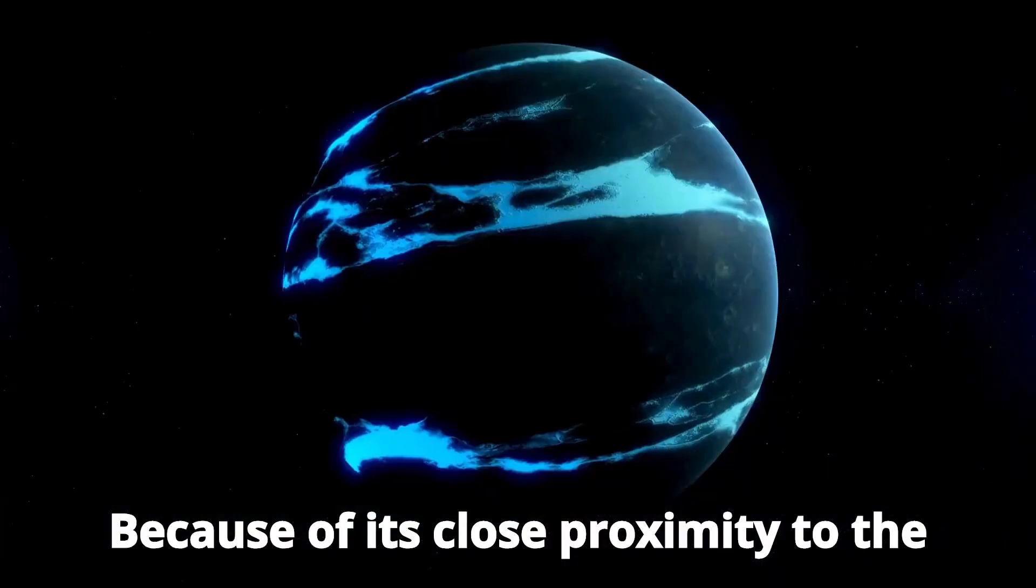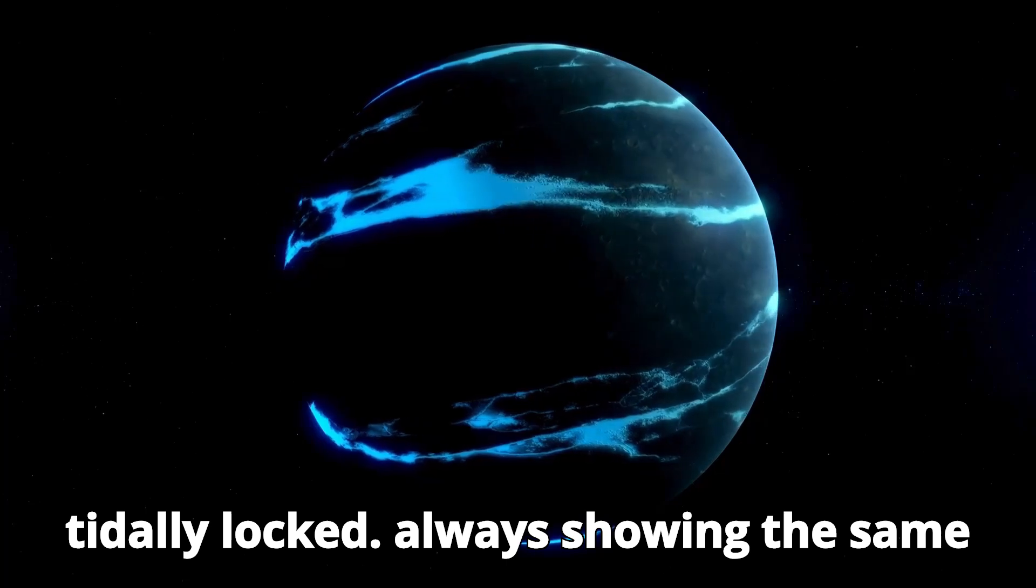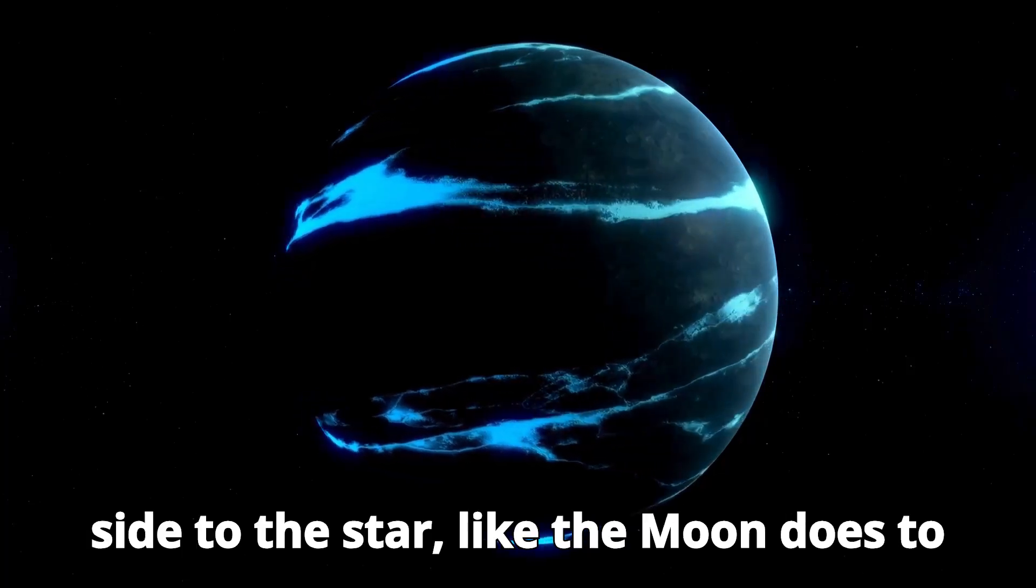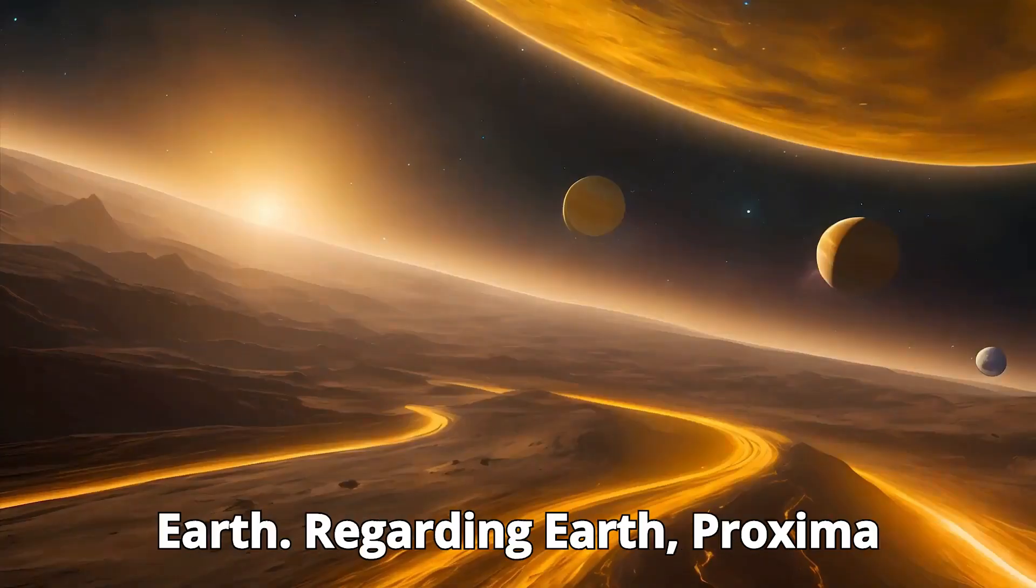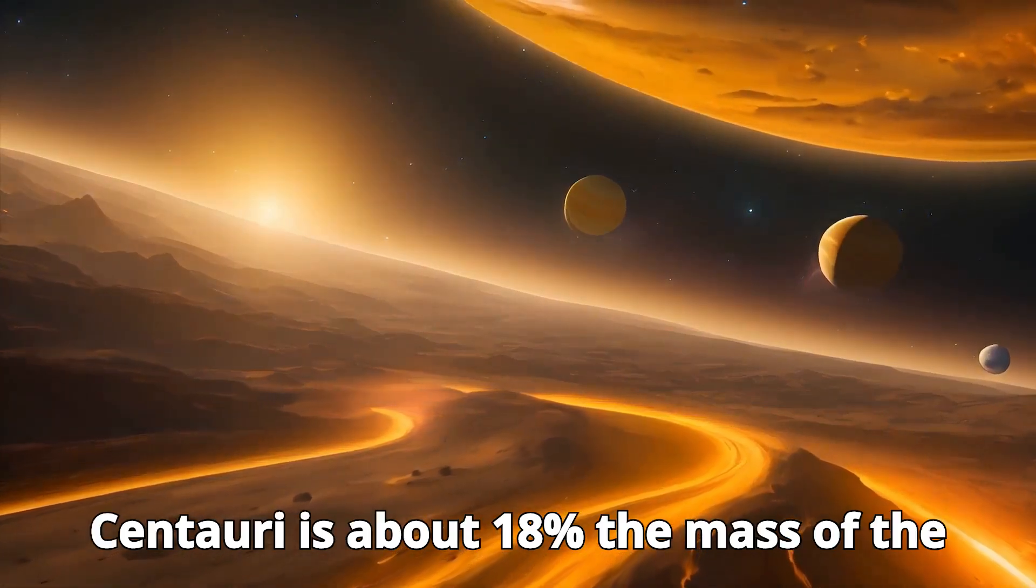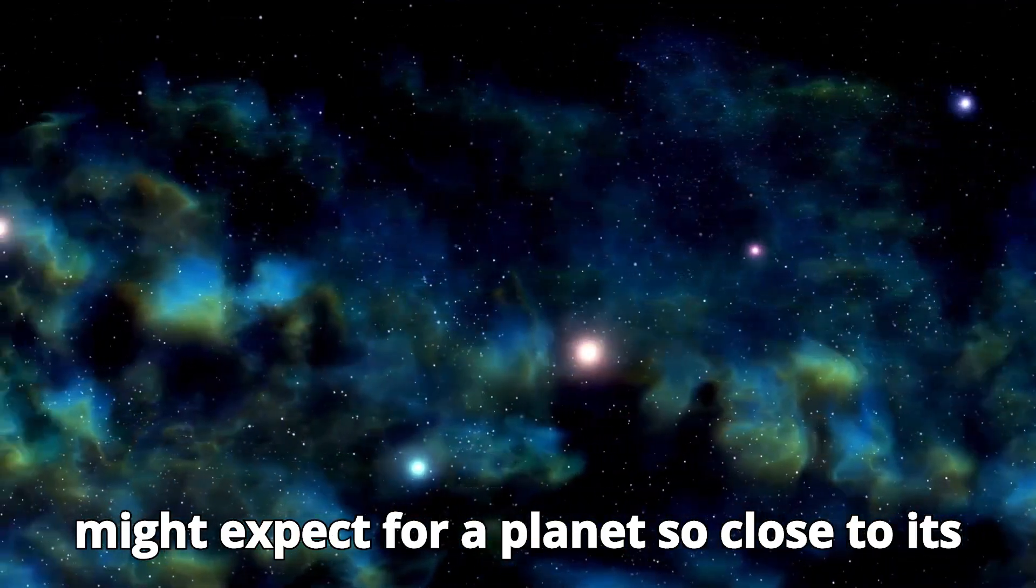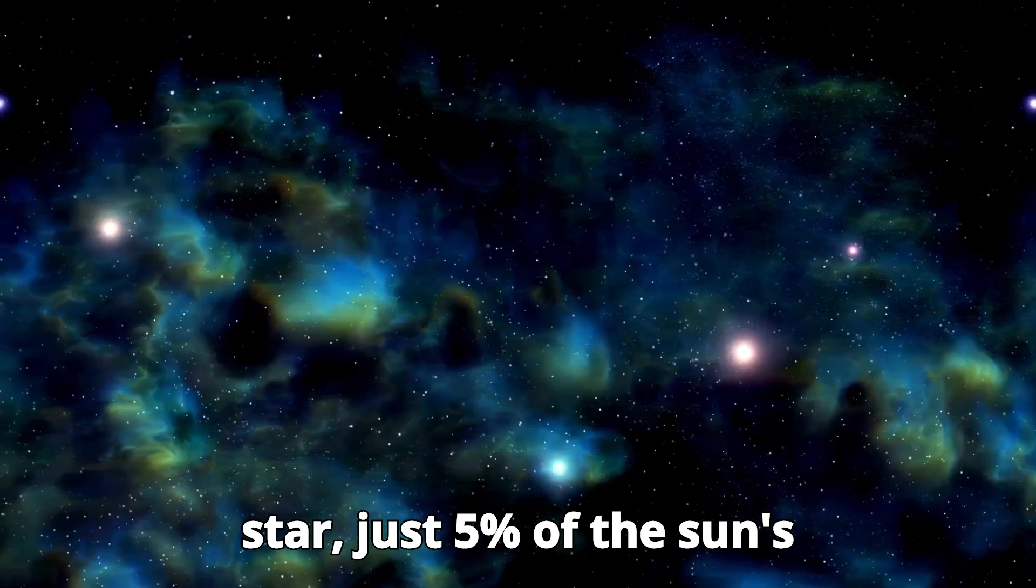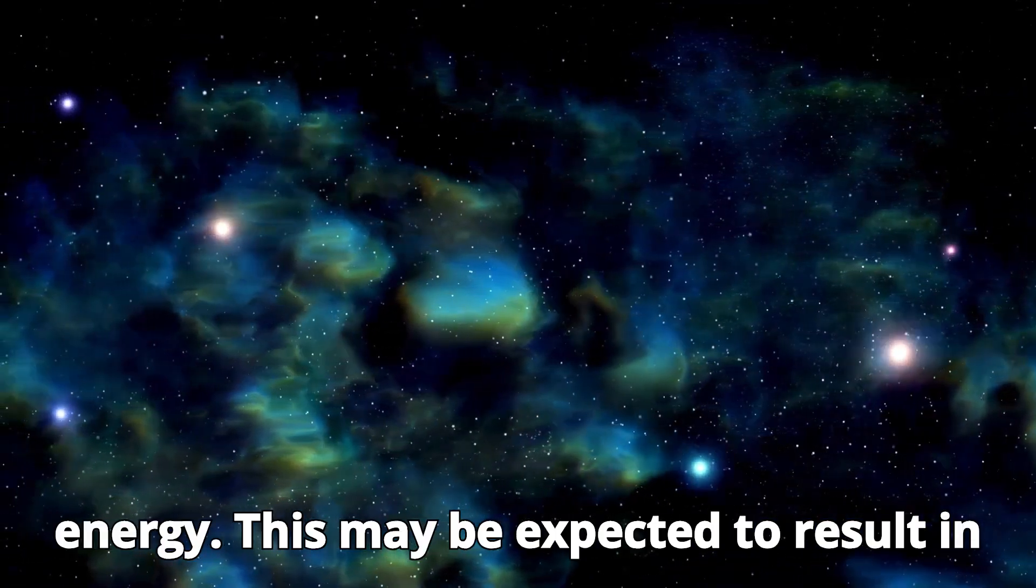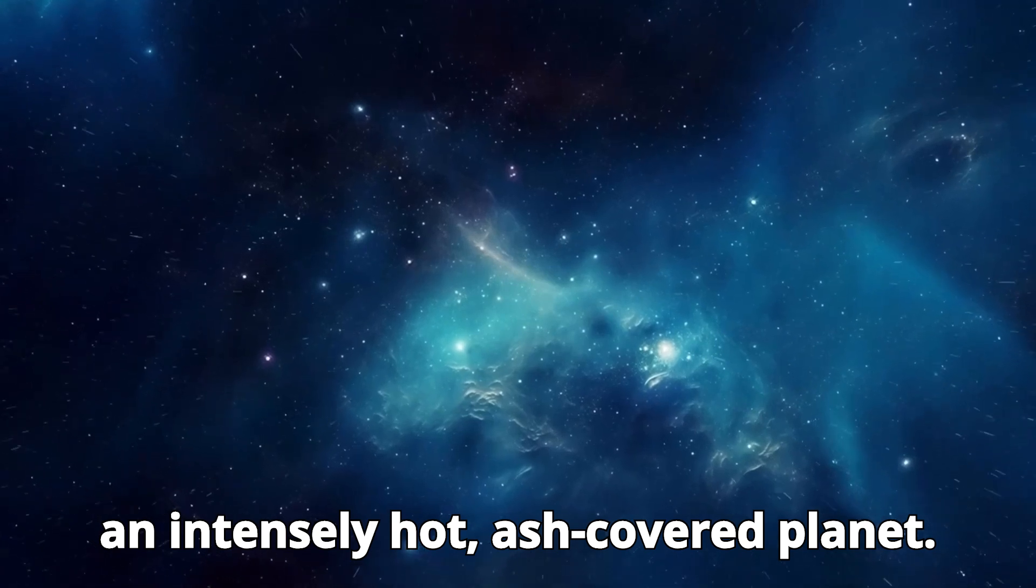Because of its close proximity to the star, Proxima b is believed to be tidally locked, always showing the same side to the star, like the Moon does to Earth. Regarding Earth, Proxima Centauri is about 18% the mass of the Sun and burns much less brightly than one might expect for a planet so close to its star, just 5% of the Sun's energy. This may be expected to result in an intensely hot, ash-covered planet.